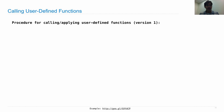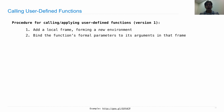Functions are only useful because we can call them. In addition to having an execution procedure for a def statement that creates the function, we also have a procedure for evaluating a call expression that uses a user-defined function. Here's the procedure for calling or applying a user-defined function: we add a local frame forming a new environment, we bind the function's formal parameters to its arguments in that frame, and finally we execute the body of the function in that new environment.